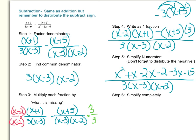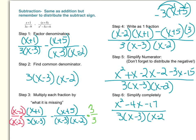Now for the last step, step six, simplify completely by combining like terms in the numerator. There are no other x squared terms, so x squared stays. Then x minus two x minus three x: x minus two x is negative one x, and negative one x minus three x is negative four x, so we write minus four x. Combining negative two and negative fifteen gives negative seventeen, so we write minus seventeen. All of that is over the common denominator of three times x minus three times x minus two. That is our answer — we have just subtracted two rational expressions.